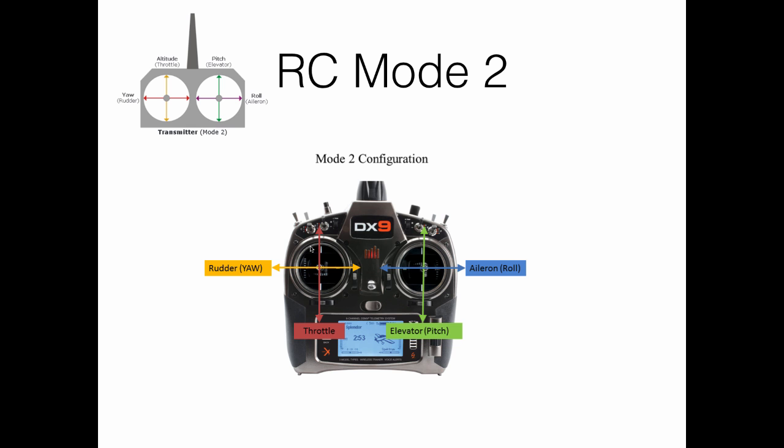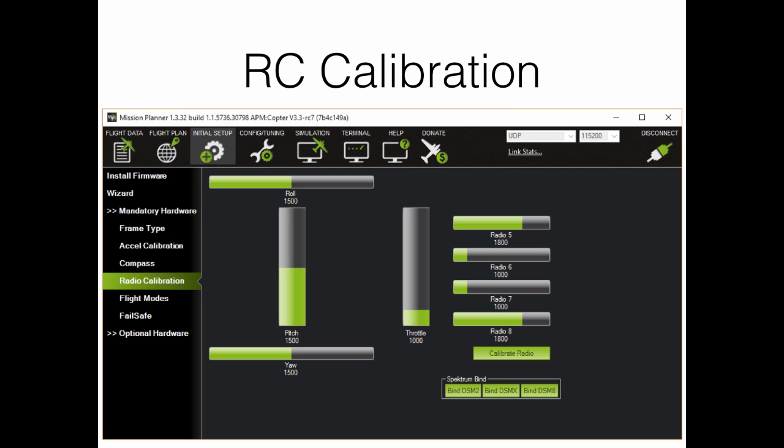These modes need to be configured through the ground station. The ground station also provides an interface for radio calibration of the RC transmitter. This slide shows the radio calibration interface from the Mission Planner ground station. The user is requested to move all left and right sticks to their extremes, either left or right and up and down, to perform radio calibration.